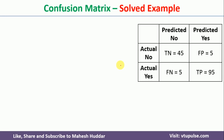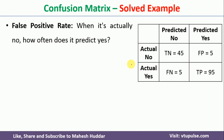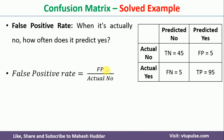The next metric is false positive rate — when a particular example is no, how often it is predicted as yes. In this case, 5 times a negative example is classified as yes, that is FP divided by actual no, which is 5 divided by 50, equivalent to 10%.